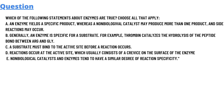We have some options here. Option A: an enzyme yields a specific product, whereas a non-biological catalyst may produce more than one product and side reactions may occur. Option B: generally an enzyme is specific for a substrate — for example, thrombin catalyzes the hydrolysis of the peptide bond between ARG and GLY.